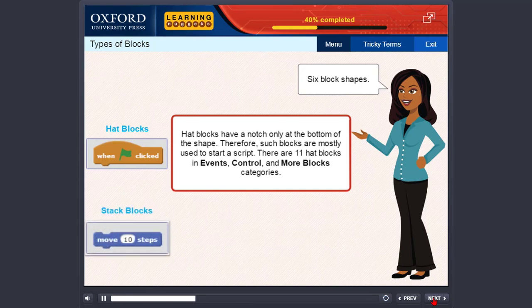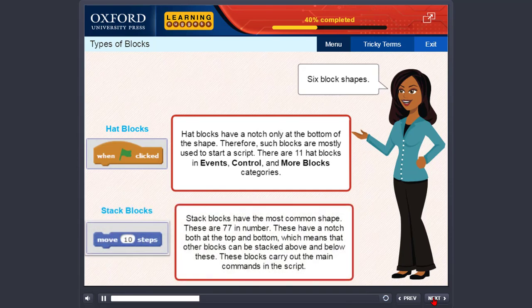Stack blocks. Stack blocks have the most common shape. These are 77 in number. These have a notch both at the top and bottom, which means that other blocks can be stacked above and below these. These blocks carry out the main commands in the script.